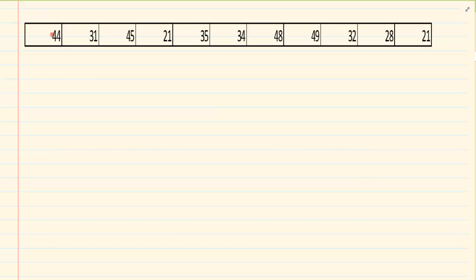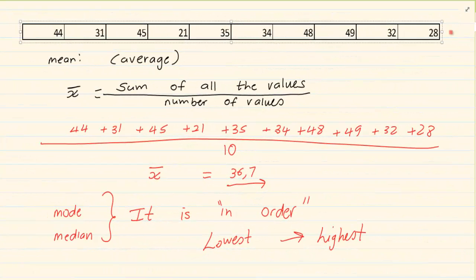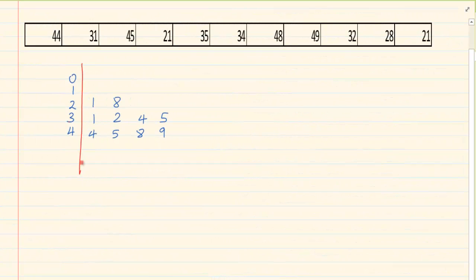Now, let us take an example of an odd number. So, we've got 1, 2, 3, 4, 5, 6, 7, 8, 9, 10, 11. Again, you would notice that the data is not in order. So, you have to do the stem-and-leaf diagram. But this value is exactly the same that we have done here. The only difference is we had added one number which is 21. So, if we take our existing stem-and-leaf diagram, but we now add 21 to it. So, we're now adding 21. Now, you can check 44. We've got it. 31, 45, 21, 35, 34, 48, 49, 32, 28 and our 21.